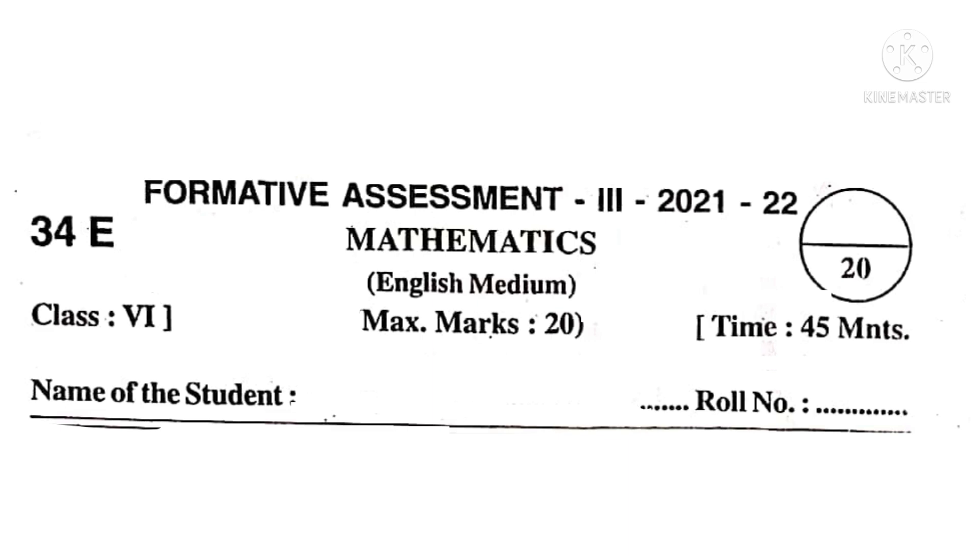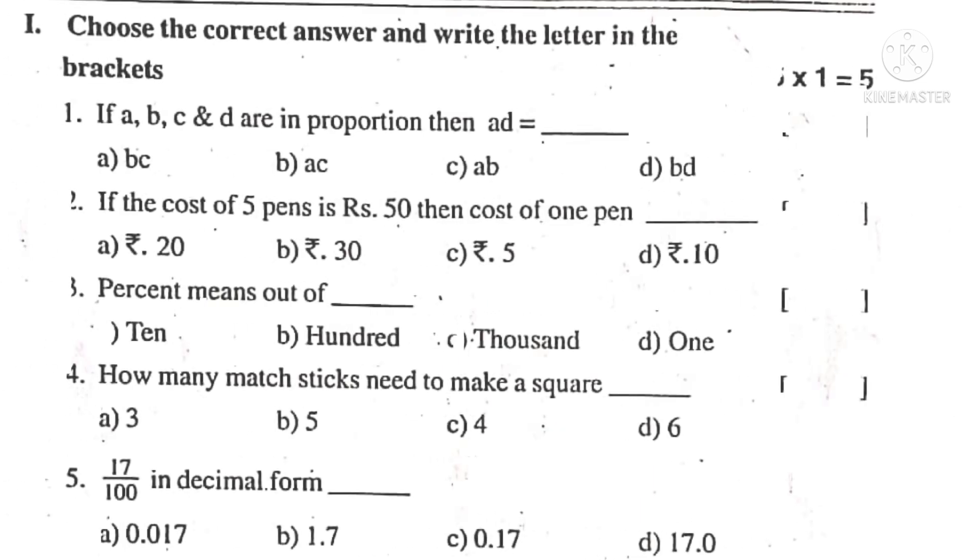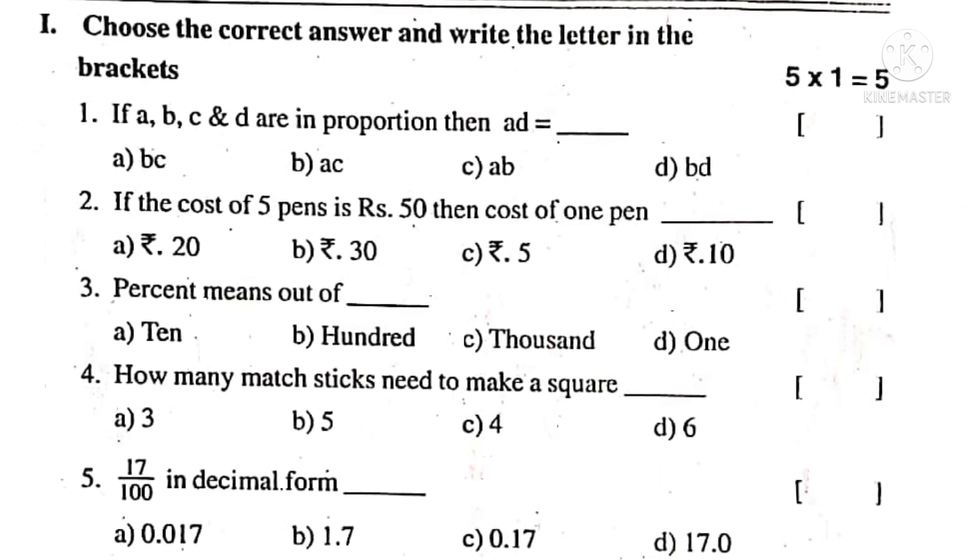Now let us take Roman No. 1. Choose the correct answer and write the letter in the brackets. No. 1. If A, B, C and D are in proportion, then AD is equal to. If A, B, C, D are in proportion, product of extremes, that is AD, is equal to product of means, that is B into C. So the correct choice is A.